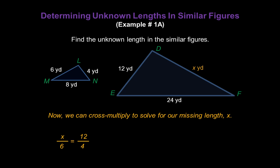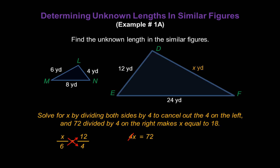Now we can cross multiply to solve for our missing length X. We know that X times 4 is 4X, and 6 times 12 is 72. Solving for X now requires dividing both sides by 4 to cancel out the 4 on the left.